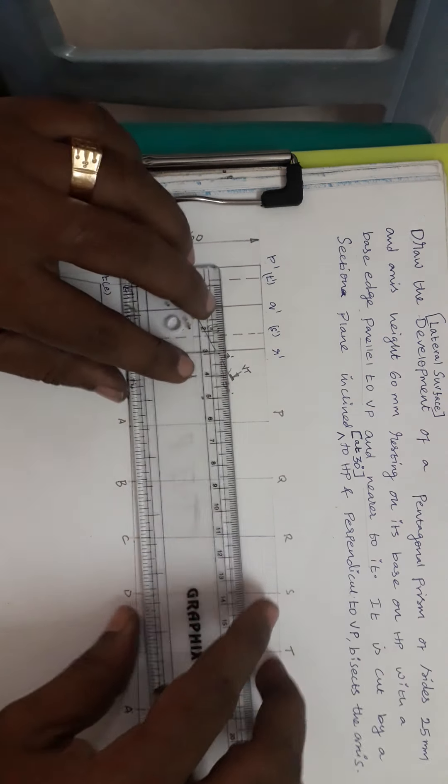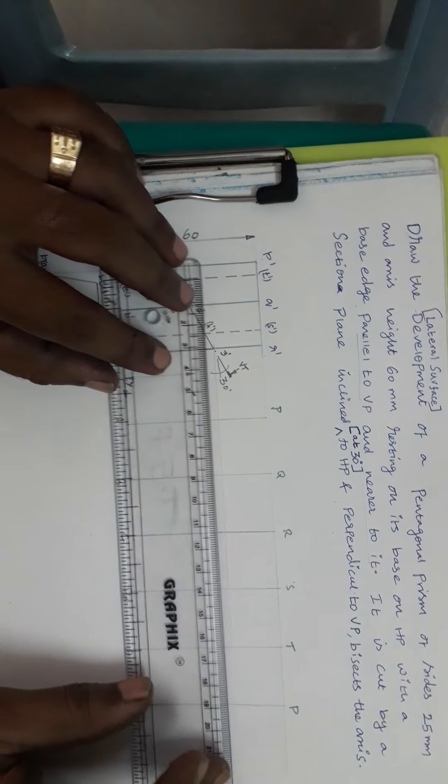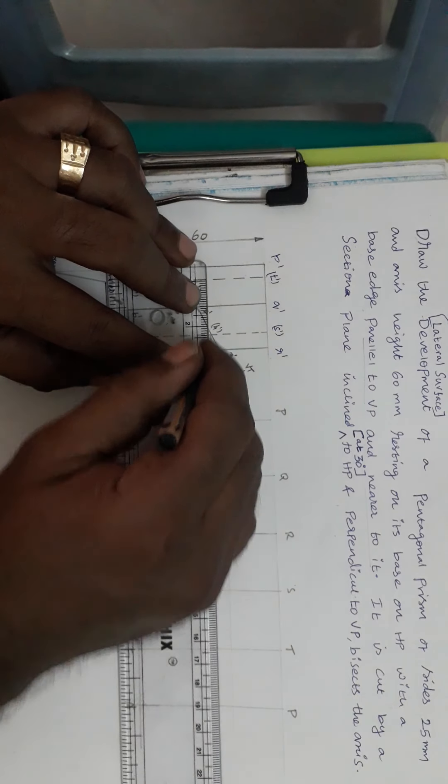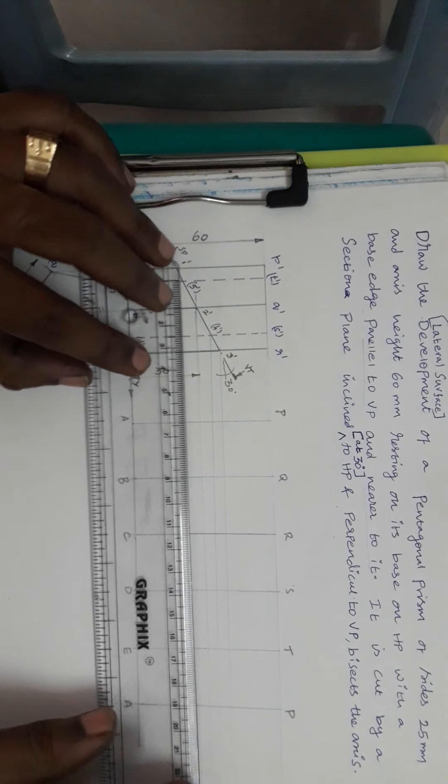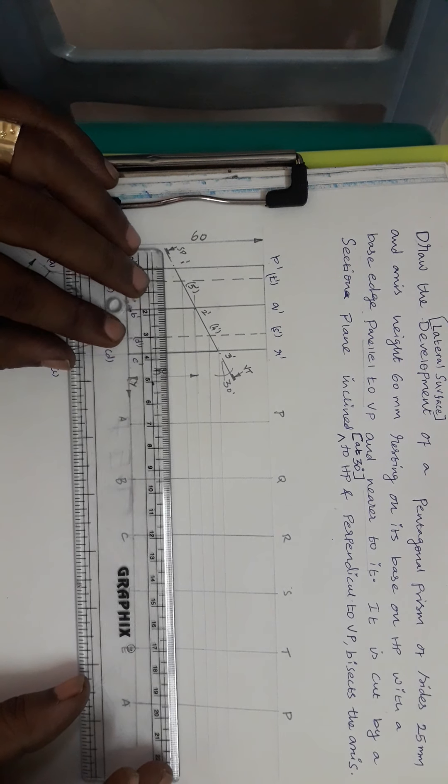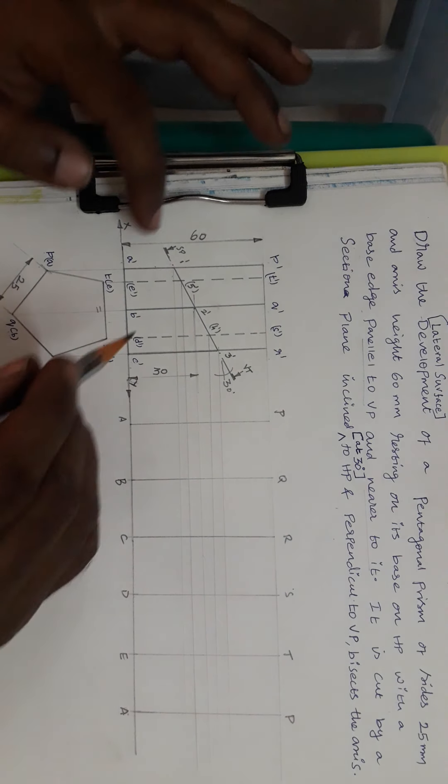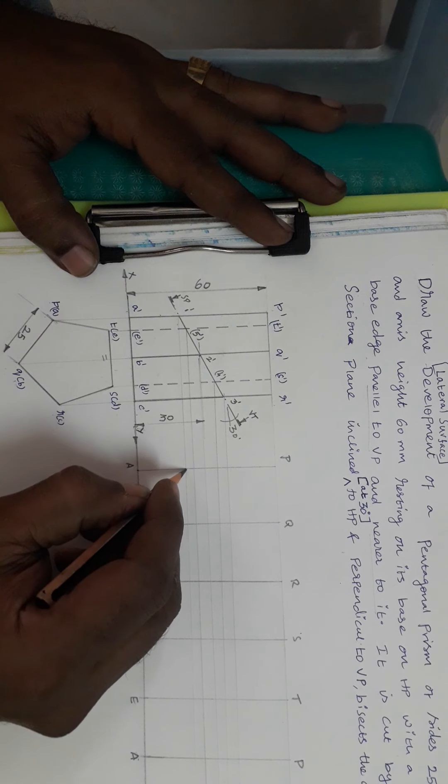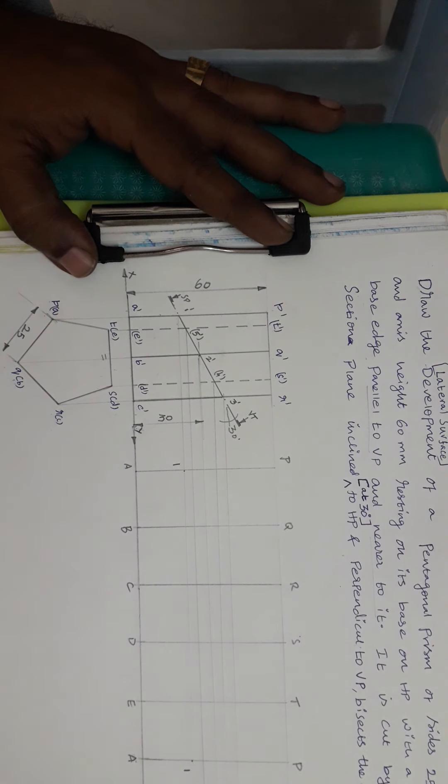We have to take all the cutting points to the corresponding lines. Use the scale and just project all the points to the development like this. 3, 4, 2, 5, and 1. Now, we can see that this point 1 is on PA. So I am marking the point 1 on PA. Similarly, here also we have PA, so I am marking 1 here.